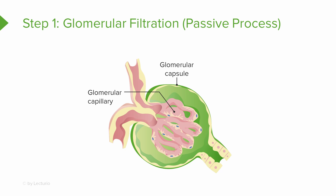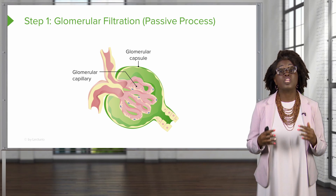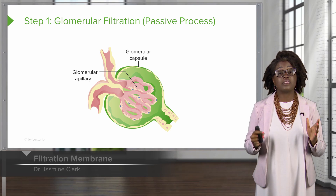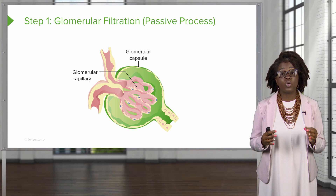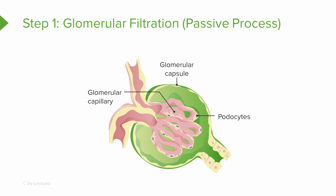Let's take a closer look at each of these steps individually, starting with glomerular filtration. This is a passive process that takes place in the glomerulus of the nephron, which is made up of glomerular capillaries surrounded by a glomerular capsule. The capsule is a double-walled epithelium where the inner wall is closest to the capillary and made up of podocytes, and the outer wall surrounds a space known as the capsular space.